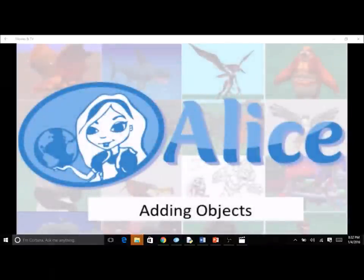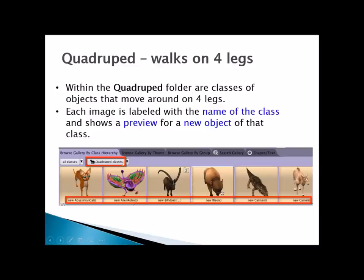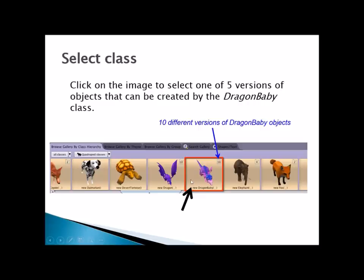In this screencast, we used the Alice scene editor to demonstrate how to add objects to a scene. Here's a review of what was covered: an example of using the folders to find what you need, sorting by different ways, and viewing the different objects in each class. You can see that there are different versions — for example, if I want a dragon baby, there are ten different versions with different colors and variations.